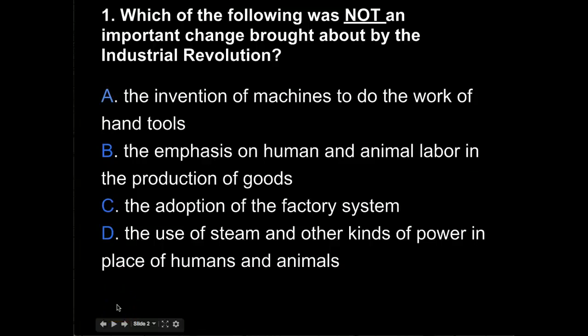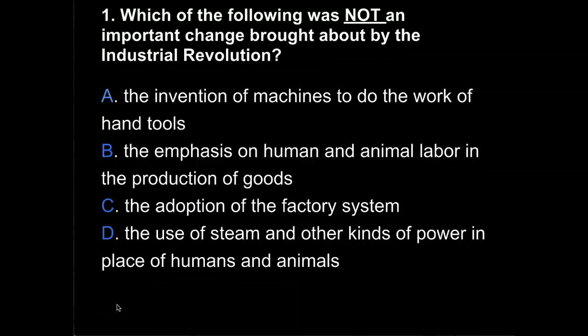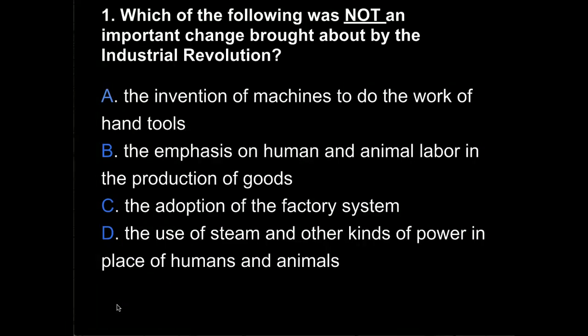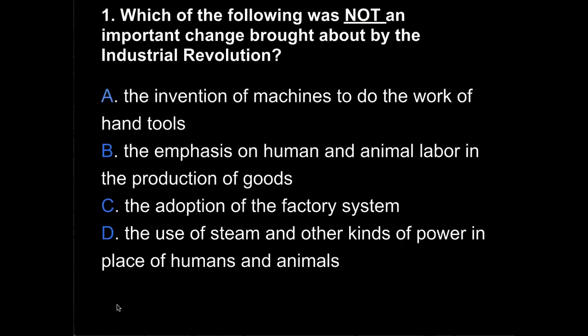Question 1. Which of the following was not an important change brought about by the Industrial Revolution? Was it A, the invention of machines to do the work of hand tools? B, the emphasis on human and animal labor in the production of goods? C, the adoption of the factory system? Or D, the use of steam and other kinds of power in place of humans and animals?